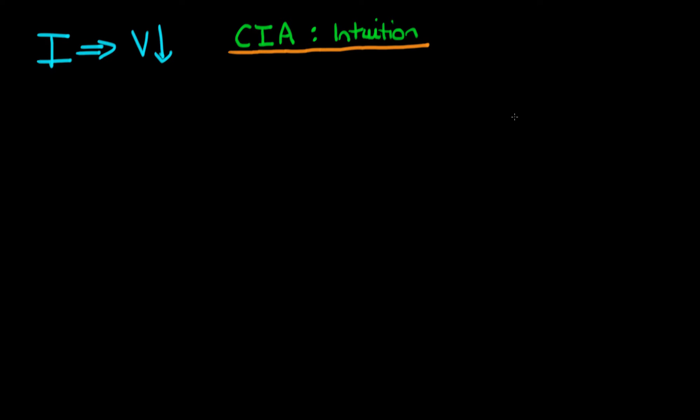In this video, I want to explain the intuition behind the conditional independence assumption, which we introduced in the last video, and explain why it allows us to at least conditionally evaluate the average causal effect.